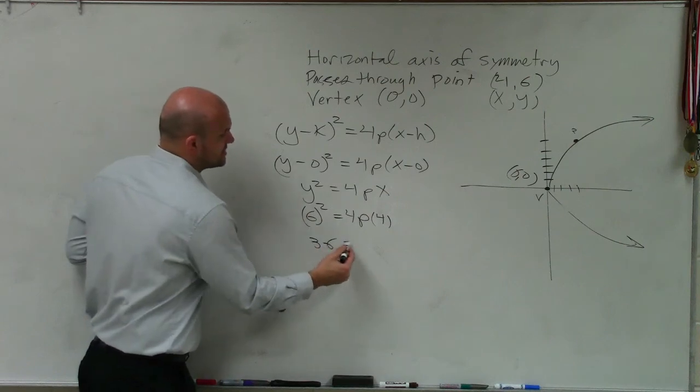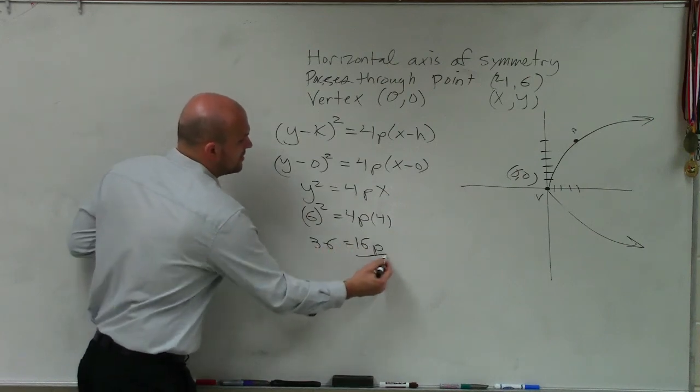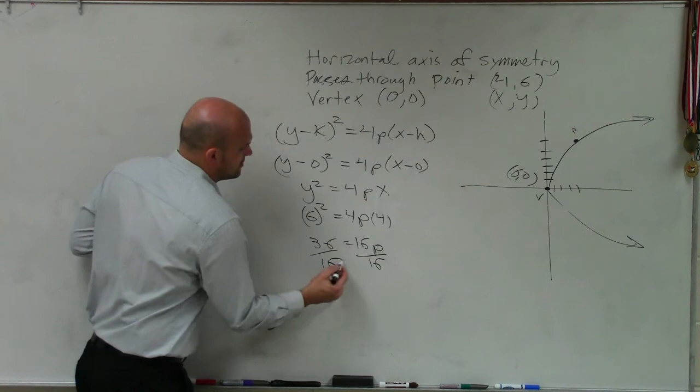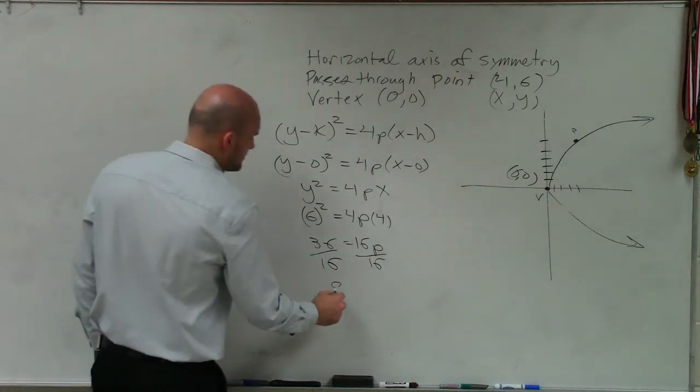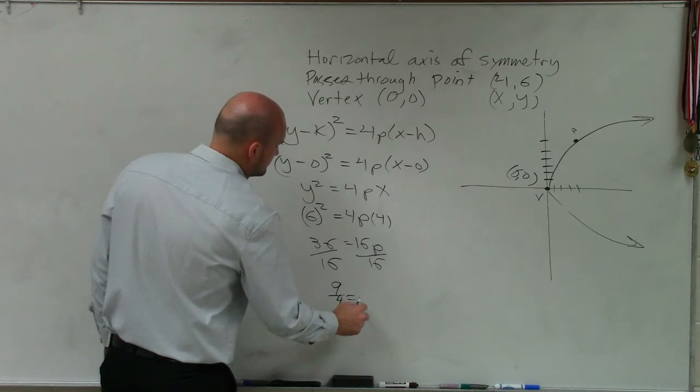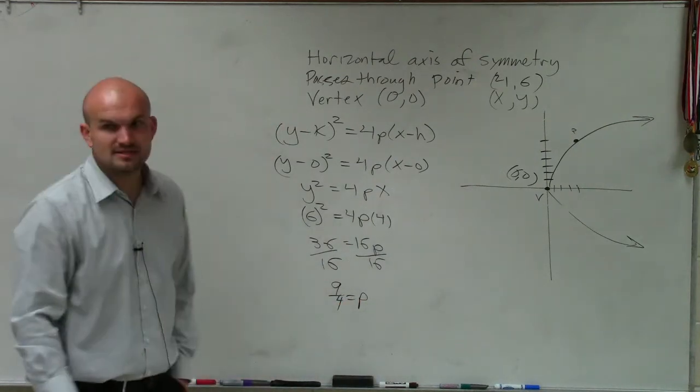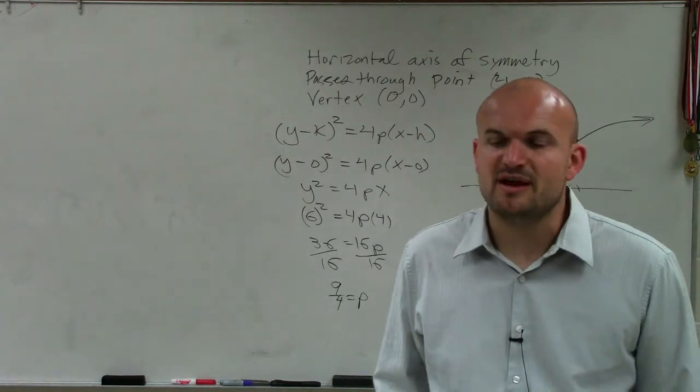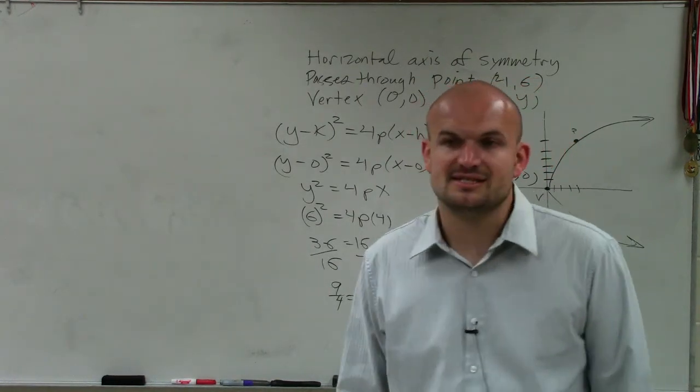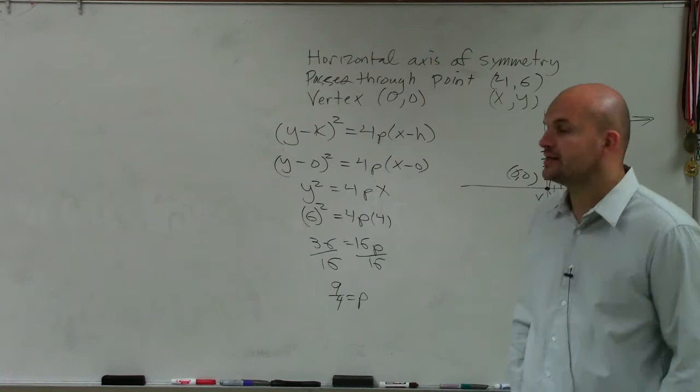So therefore, that's 36 equals 16p, divided by 16. Divide by 16. That's going to be 9 fourths. Does that make sense? I divided 36 by 4, which was 9, and I divided 16 by 4, which is 4. So that's why I got 9 fourths.